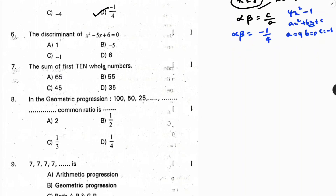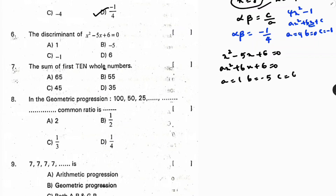Next: find the discriminant of x² − 5x + 6 = 0. Comparing with ax² + bx + c: a = 1, b = −5, c = 6. Discriminant = b² − 4ac = (−5)² − 4(1)(6) = 25 − 24 = 1. Correct option is A.